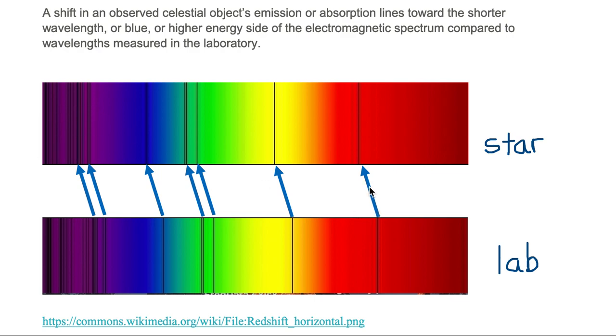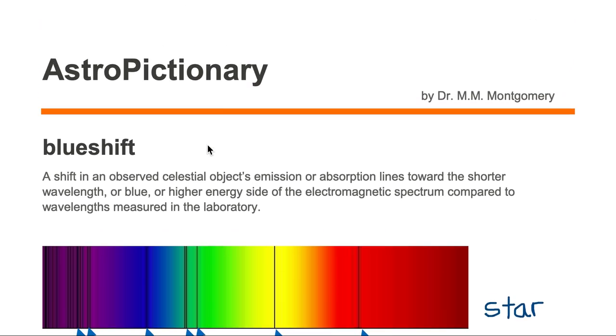So all the lines are shifted to the left of the ones that are in the lab. So we would say the star's absorption spectra has a blue shift because all the lines are towards the blue side, or the higher energy side, or the shorter wavelength side. Hence, blue shift.